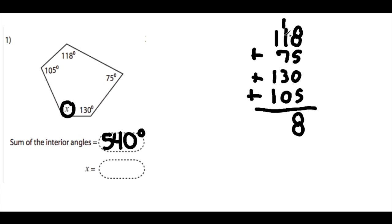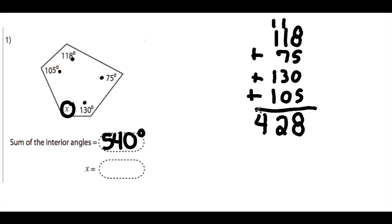Working through the addition: 5 plus 5 is 10, plus 8 gives us 18 — bring down the 8, carry the 1. Then 7 and 3 is 10, plus 1 is 11, plus 1 is 12 — carry the 1. And 1 plus 1 plus 1 plus 1 is 4. So all four of the angles we have equal 428 degrees.